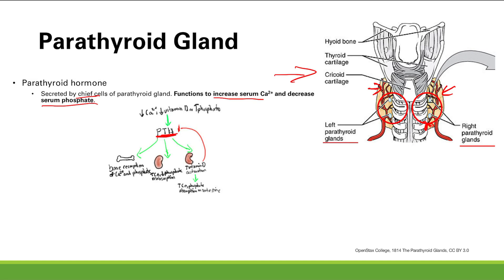PTH acts on the bone, causing bone resorption of calcium and phosphate — releasing calcium and phosphate into the blood. In the meantime, you're breaking down and weakening the bone a little bit. So that's important to know.